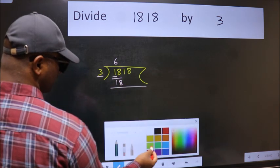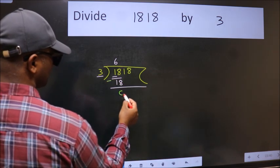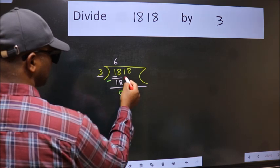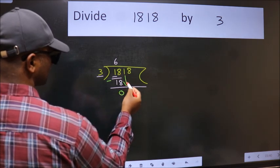Now we should subtract. We get 0. After this, bring down the beside number. So 1 down.